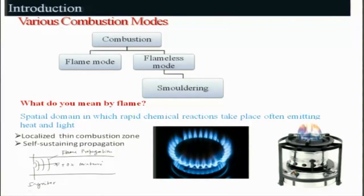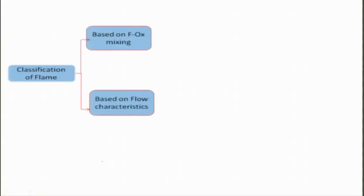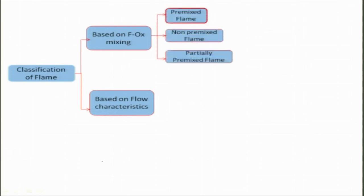Let us look at how to classify a flame. The flame can be classified on various bases: one is the extent of mixing of fuel and oxidizer, and we can also classify based on physical state — whether it is a gaseous fuel flame, a liquid flame, or a solid fuel flame. Based on fuel-oxidizer mixing, we divide the flame into three categories: premixed flame, non-premixed flame, and partially premixed flame. Based on flow characteristics, we divide into laminar flame and turbulent flame.